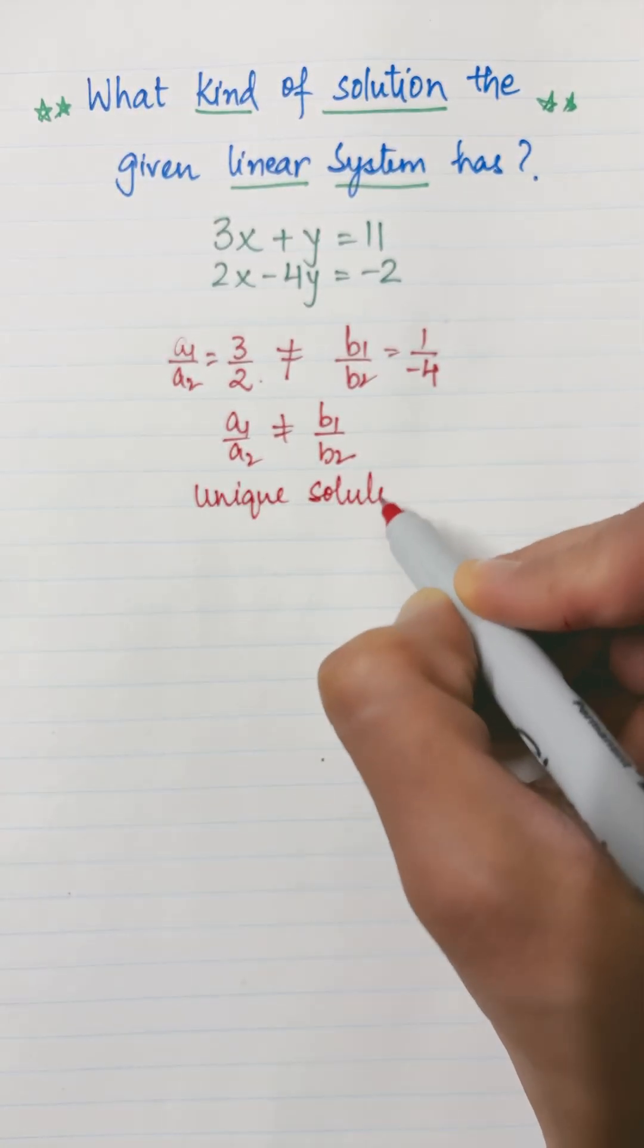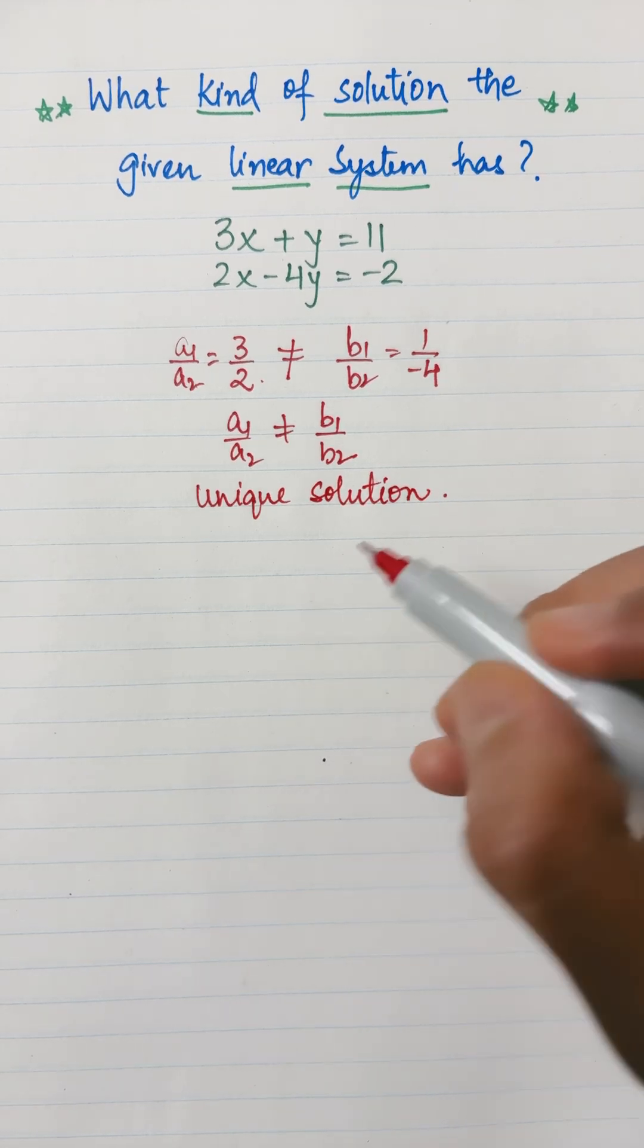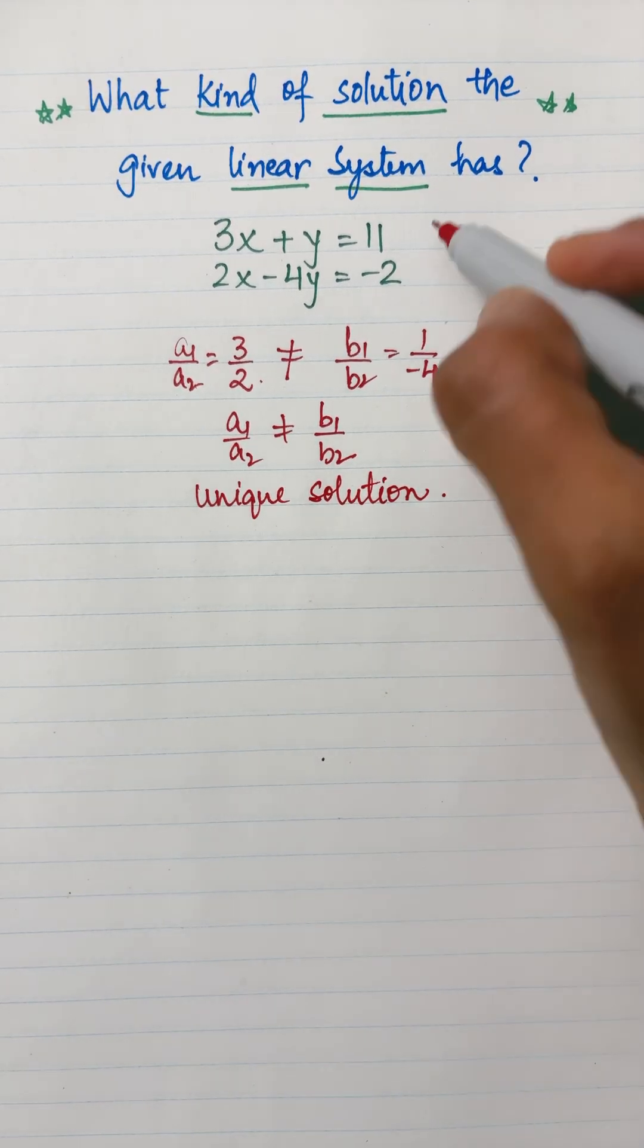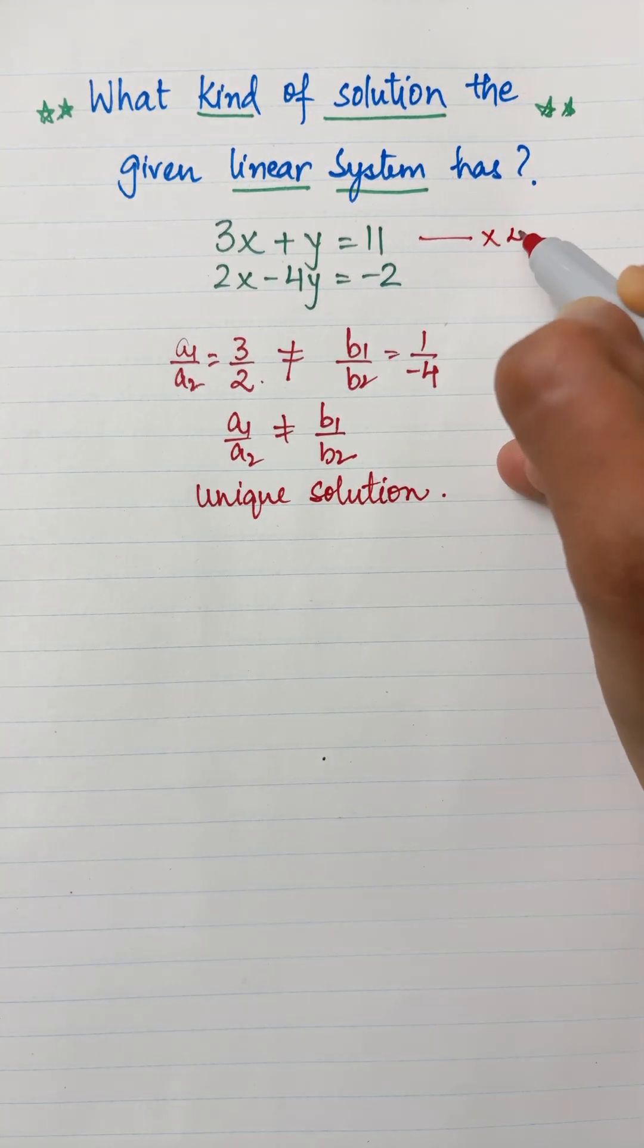Unique solution means exactly one solution. We can find that solution either by graphical, elimination, or substitution method. I will be using the elimination method. So let's multiply this equation by 4.